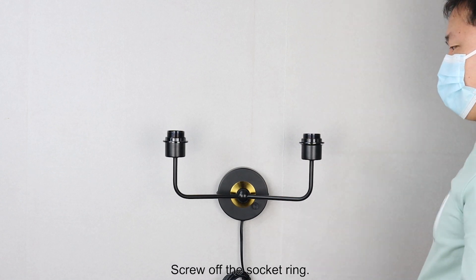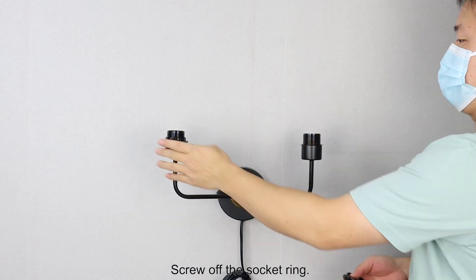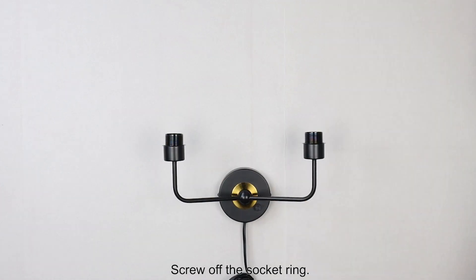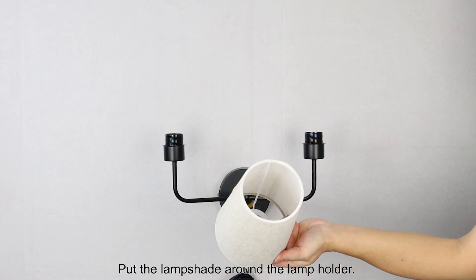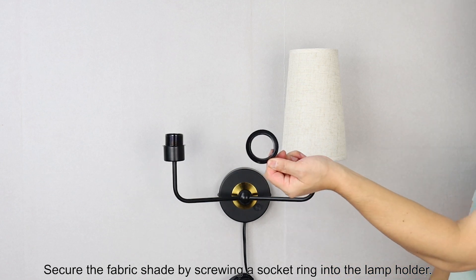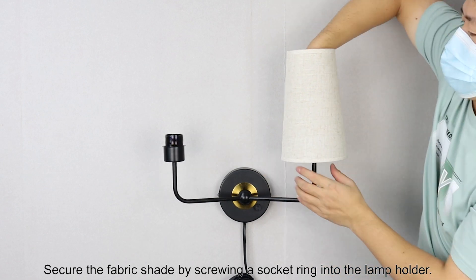Screw off the socket ring. Put the lampshade around the lamp holder. Secure the fabric shade by screwing a socket ring into the lamp holder.